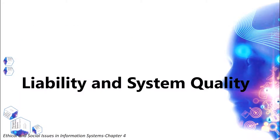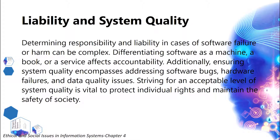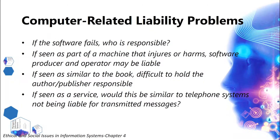Liability and System Quality. Determining responsibility and liability in cases of software failure or harm can be complex. Differentiating software as a machine, a book, or a service affects accountability. Additionally, ensuring system quality encompasses addressing software bugs, hardware failures, and data quality issues. Striving for an acceptable level of system quality is vital to protect individual rights and maintain the safety of society.